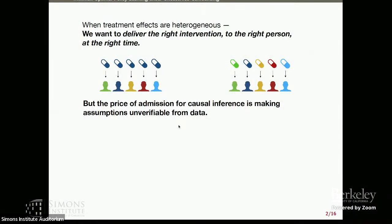Let me start with a high-level overview of why we want to use causal inference to make personalized decisions from data. When treatment effects are heterogeneous, we can improve decision-theoretically by tailoring treatments to those who would most benefit. The problem is that causal inference, although quite powerful, requires a lot of assumptions — assumptions that hold by design in randomized controlled trials, but not necessarily in observational data such as electronic medical records.